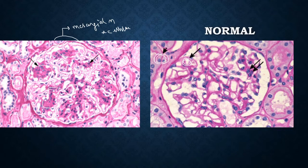This is a normal glomerulus. Compared to the normal glomerulus, this is how a mesangial proliferation looks like in terms of mesangial cellularity and matrix expansion.